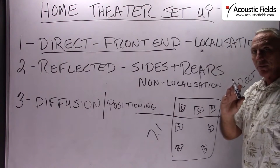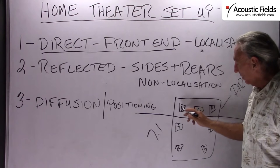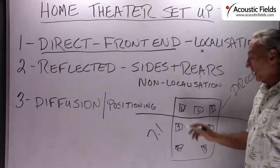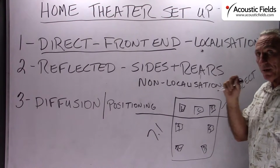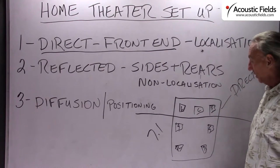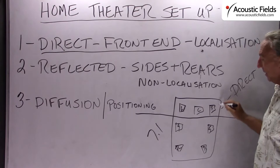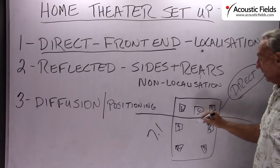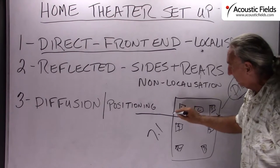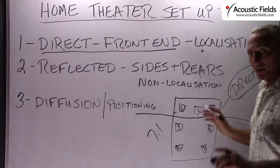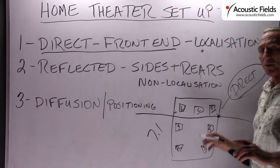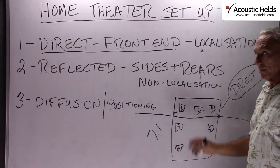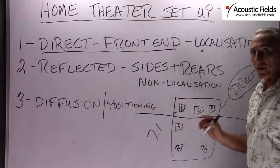We want the movement from left to right on the screen to go from the left to the right speaker, possibly through the center channel, but from the left to the right speaker in sequence with the movement on the screen. So the front of the house is all about the balance between direct and reflected energy from the surfaces. We want a similar situation for the front of the home theater as we want with a two-channel playback system — nice sound stage, good definition, good focus.